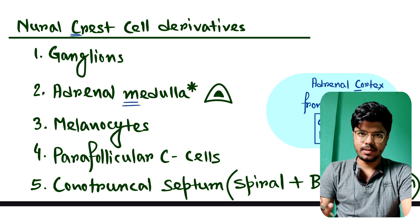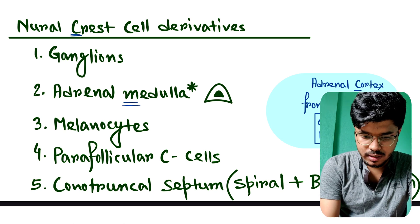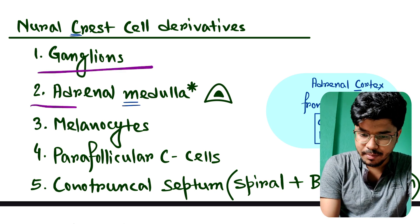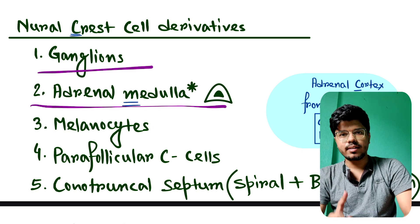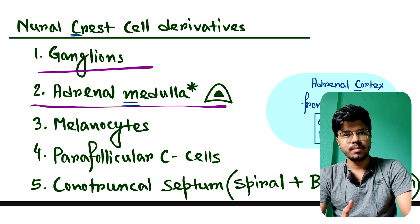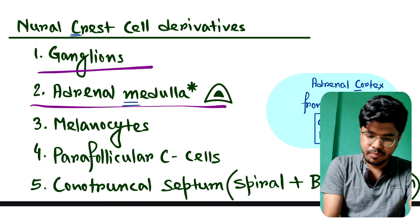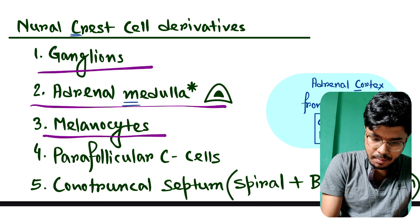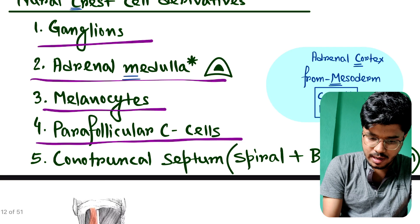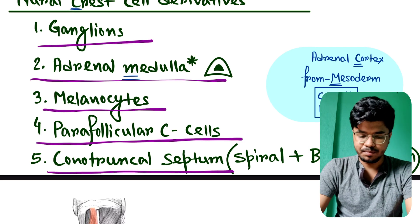Now we have to remember the neural crest cell derivatives. The derivatives are ganglions, adrenal medulla - not adrenal cortex. Adrenal cortex is developed from mesoderm. Adrenal medulla is developed from neural crest cell. Also melanocytes, parafollicular C cells, and conotruncal septum.